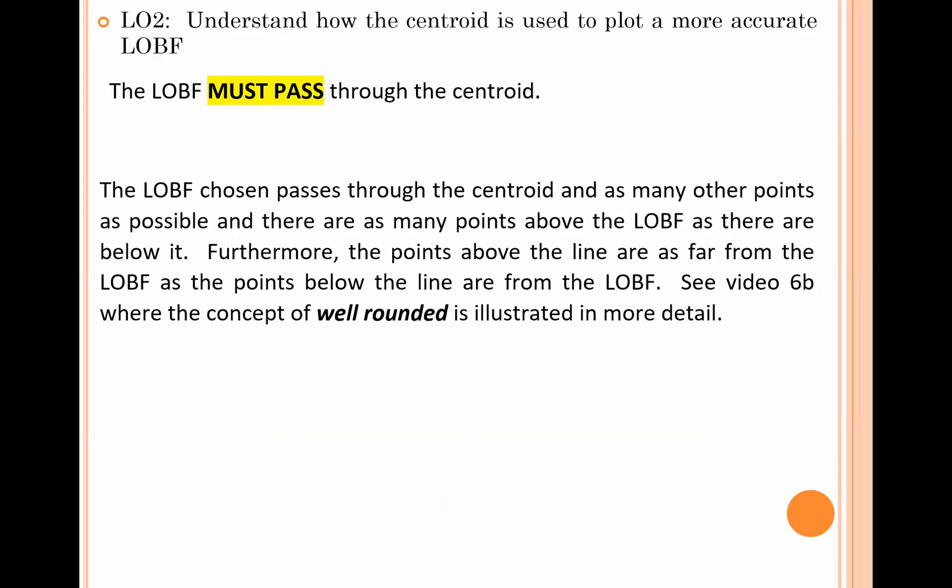The next thing we're going to look at is understanding why that centroid is used - ultimately to give us a more accurate line of best fit. Your line of best fit must pass through the centroid. The line of best fit chosen passes through the centroid and as many other points as possible. There are as many points above the line of best fit as there are below it. Furthermore, the points above the line are as far from the line of best fit as the points below the line. If needed, refer back to video 6b where this concept of well-rounded was discussed in detail.